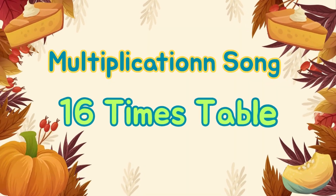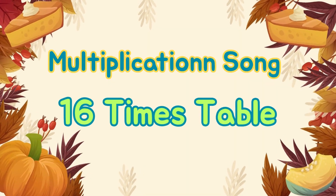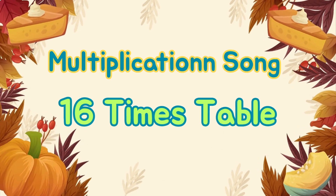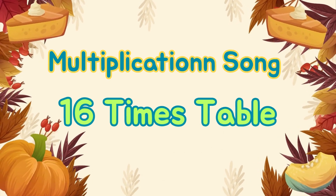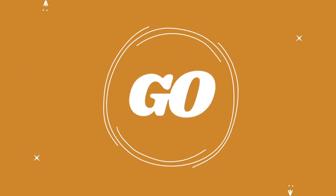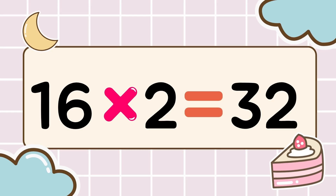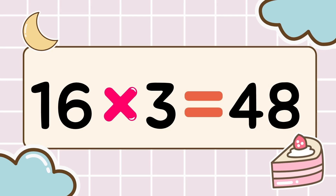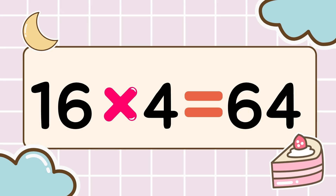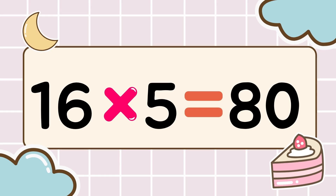That's time! Let's start multiplying! Let's have fun while we learn. 3, 2, 1, let's go! 16 times 1 is 16. 16 times 2 is 32. 16 times 3 is 48. 16 times 4 is 64. 16 times 5 is 80.